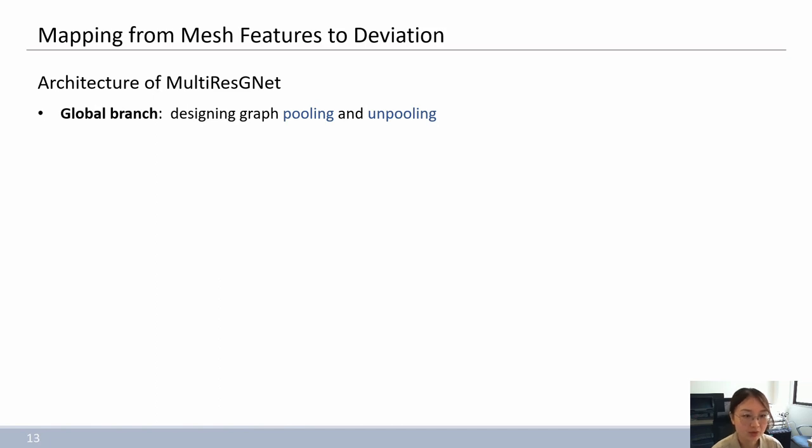In addition to the local branch, we propose the global branch to globally summarize all the node feature representations and therefore improve the generalization.